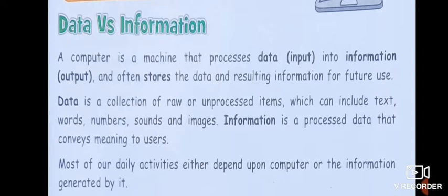Data refers to input — that is whatever we give to the computer for processing. And information refers to output — that is whatever the computer gives us after processing. What we give to the computer for processing is input, that is data. And what the computer gives us after processing is output, that is information. Also, the computer saves our work for future use, so we can store our work in the computer.